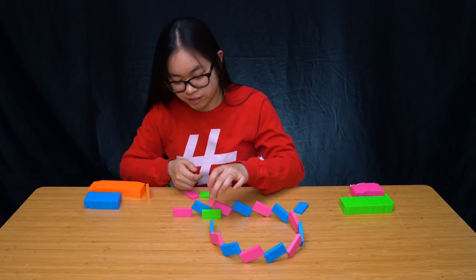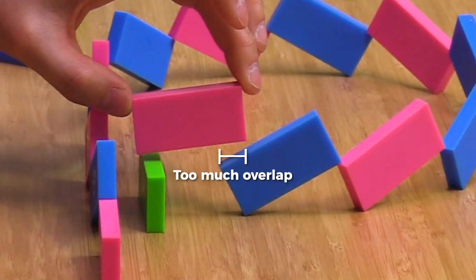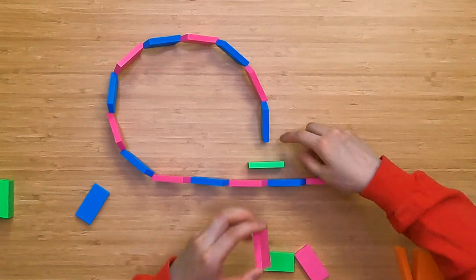Because we wouldn't want this pink domino, for example, to end up being too far on top of the previous domino because then it might not fall over. We still want just a little bit of the domino on this blue domino.